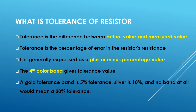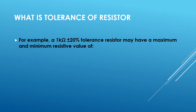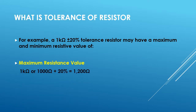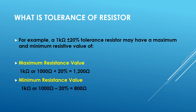Sometimes there is no band present on the resistor, in which case you assume the tolerance value as 20%. For example, a 1 kilo-ohm ±20% resistor means the maximum resistance value will be 1 kilo-ohm plus 20%, which is 1200 ohms, and the minimum resistance value will be 1 kilo-ohm minus 20%, which is 800 ohms. So ±20% is the tolerance value of that resistor.